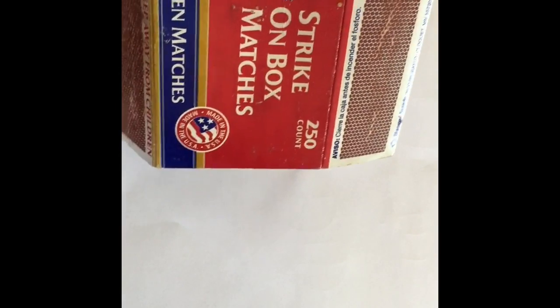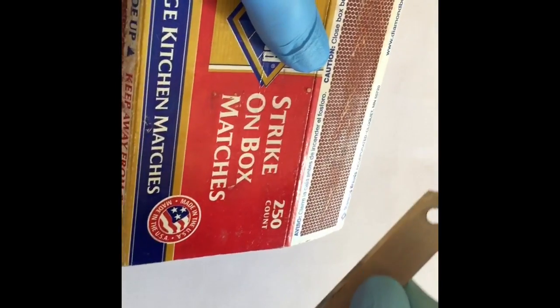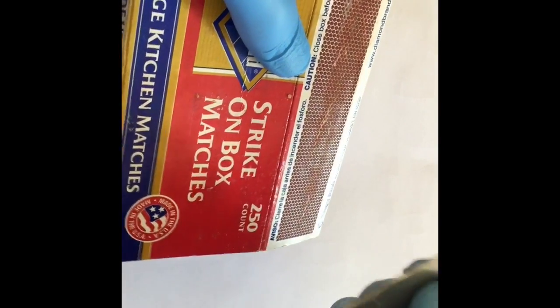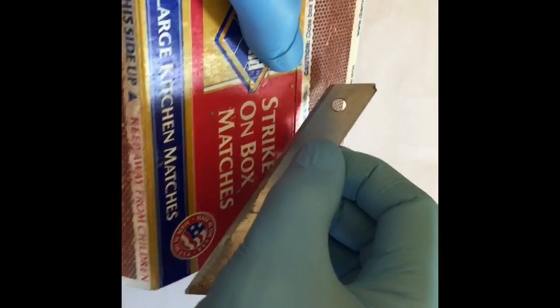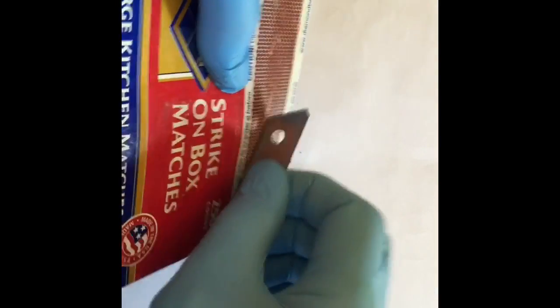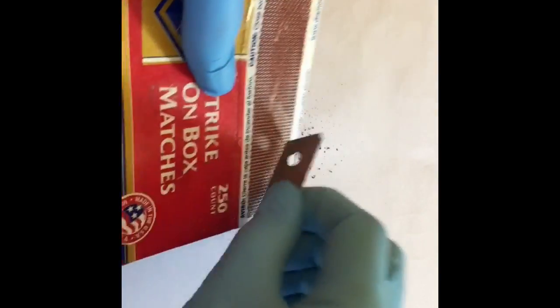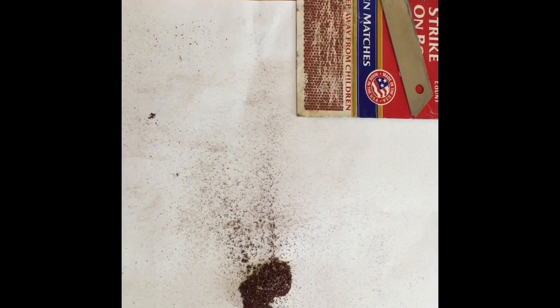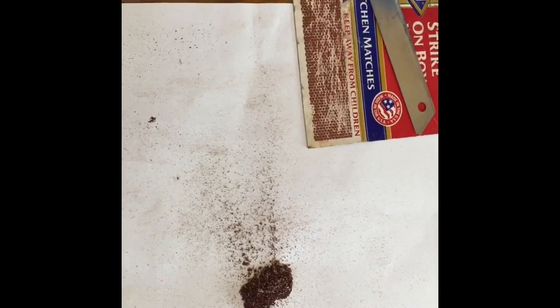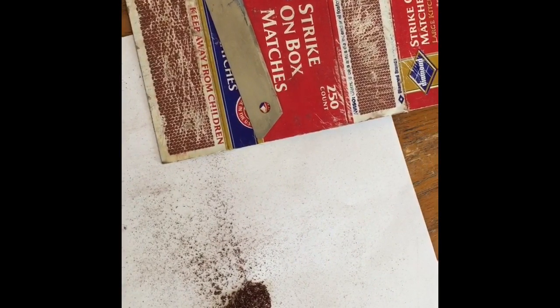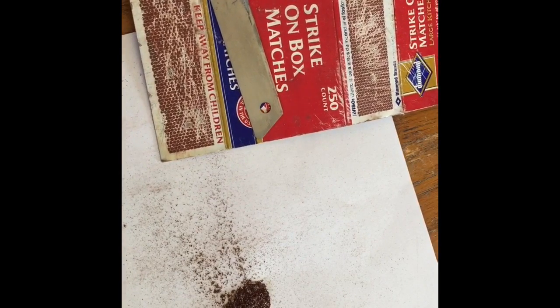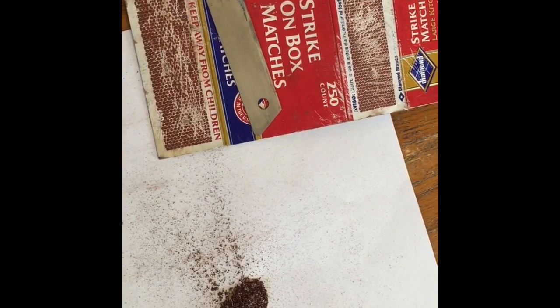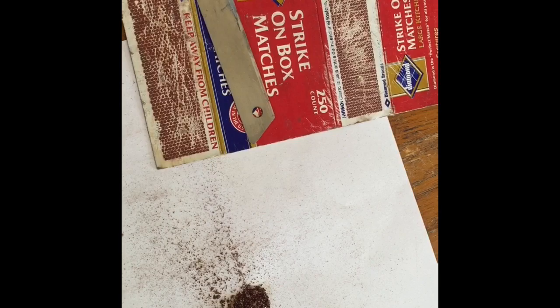The first thing we want to do is get some of the striker material off of a matchbox, and the best way of doing that is just with a blade like this, scraping it off. I've just about finished scraping most of that off. Any more scraping will just take the paper and glue that's underneath it off. That's just from a single matchbox and you can see I've got a good amount there.